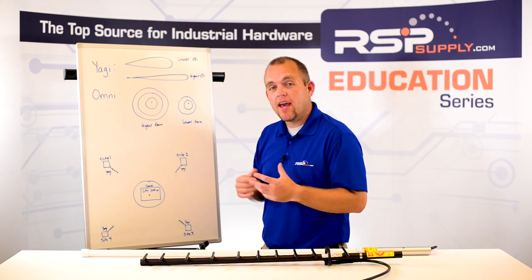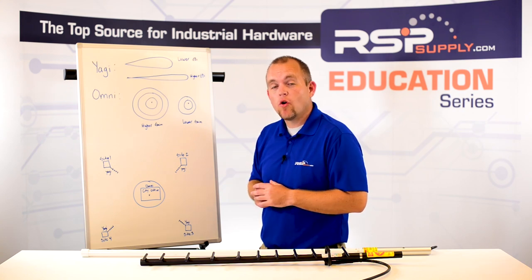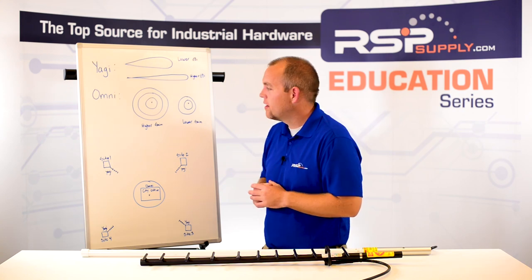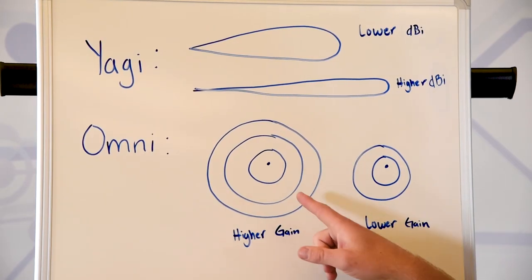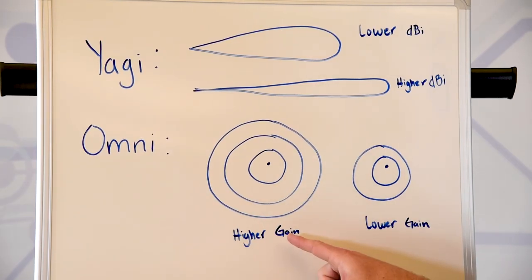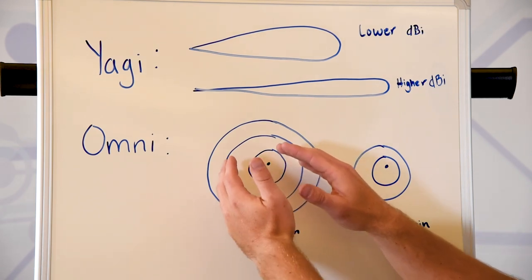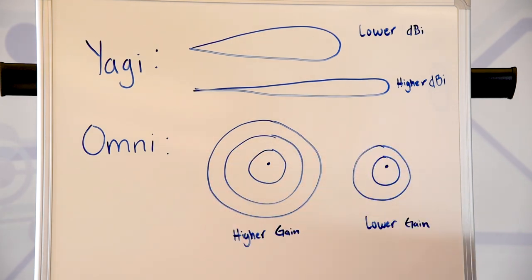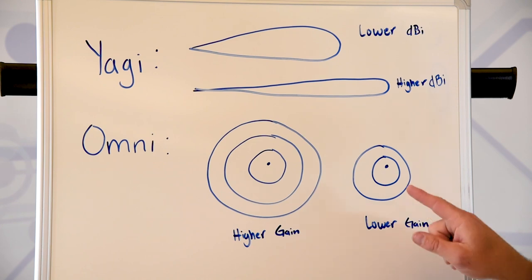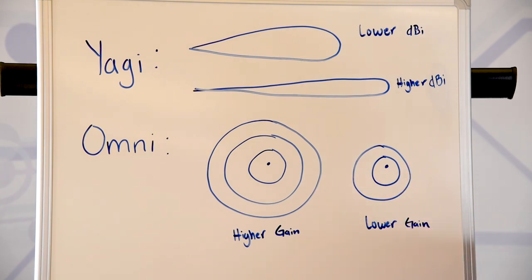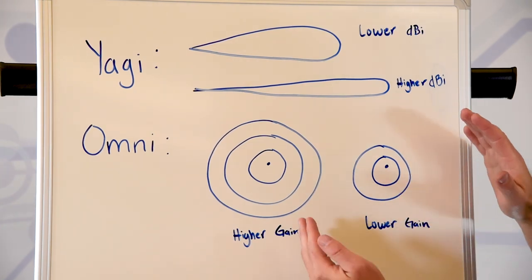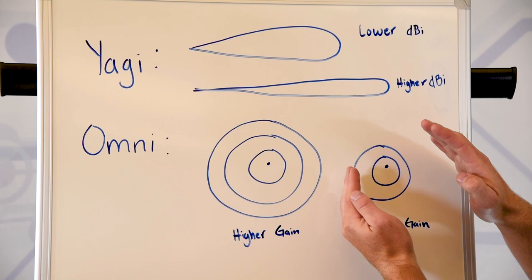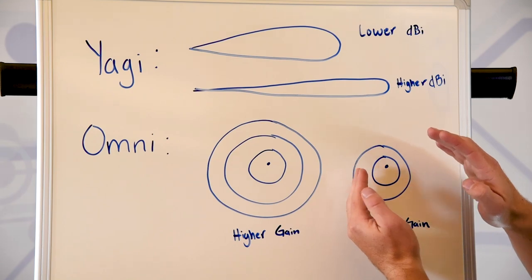In regards to Omni and the dB rating, or gain, the higher dB rating we have increases the signal strength, therefore increasing the area in which it can communicate. A lower dB rating on an Omni antenna reduces our signal strength, therefore reducing the area in which it can communicate.